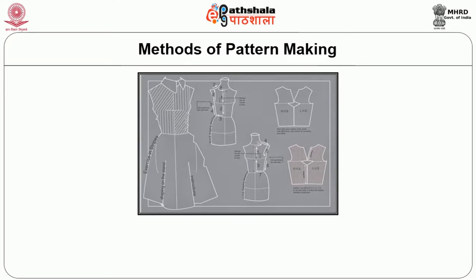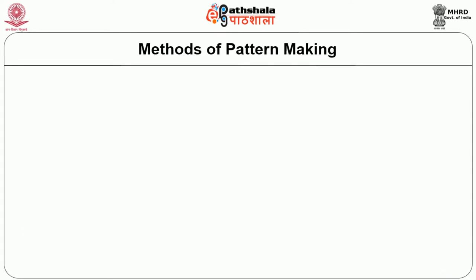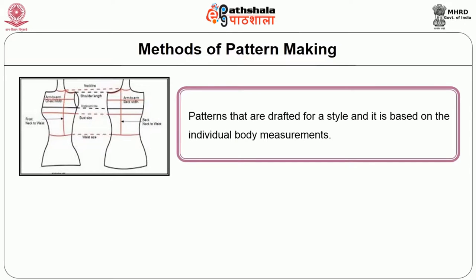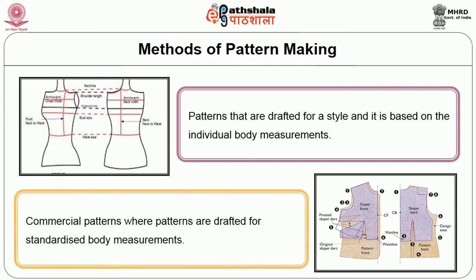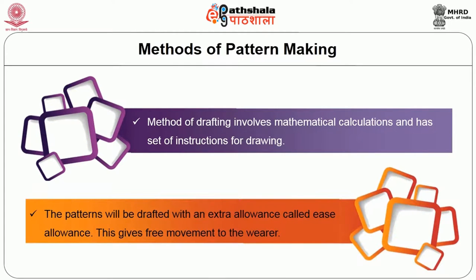Pattern making can be broadly divided into two types: drafting and draping. The drafting method is also termed the flat pattern method, as patterns are drafted on flat paper. Drafted patterns are of two types: first, patterns drafted for a style based on individual body measurements; and second, commercial patterns drafted for standardized body measurements. All drafting patterns involve mathematical calculation and a set of instructions for drawing. Patterns are drafted with an extra allowance called ease allowance, which gives free movement to the wearer.